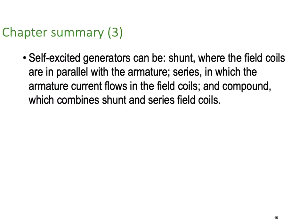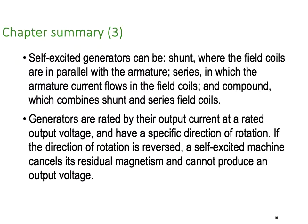Self-excited generators can be shunt, where the field coils are in parallel with the armature; series, where the armature current flows through the field coils; or compound, which combines both shunt and series field coils. Generators are rated by their output current at their rated output voltage. Remember, we'll have to put more power in than we'll ever get out because of losses. If the direction of rotation is reversed, a self-excited machine cancels its residual magnetism and cannot produce an output voltage. That's a trick for beginners.